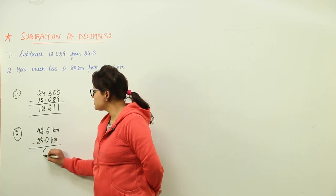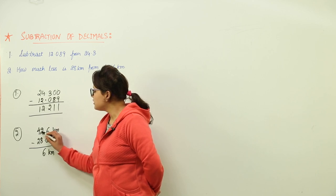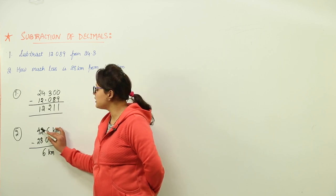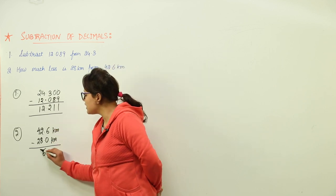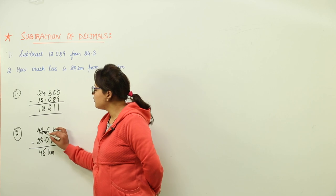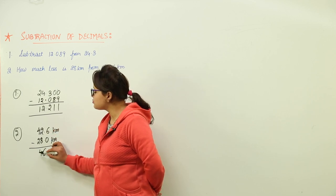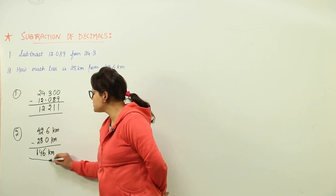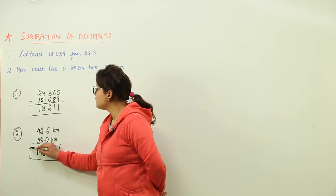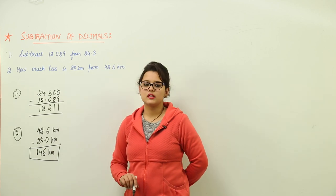We get 6 minus 0 as 6, and here 42 minus 28. For that we will take a carry from that side, 12. 12 minus 8 is 4, whereas 3 minus 2, the next one we are left with is 1. So we get 14.6 kilometers as the answer for the second part.